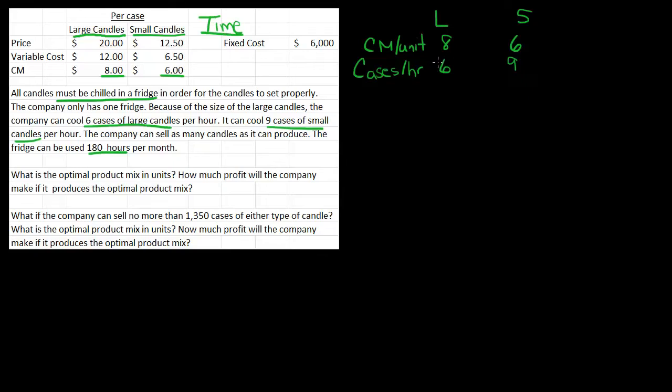So if I take and multiply these numbers together, I get CM per hour. So for large I get $48 per hour. And for small I get $54 per hour.